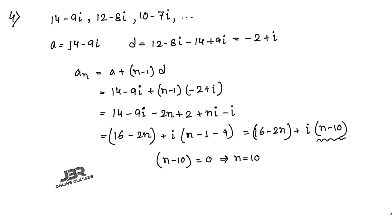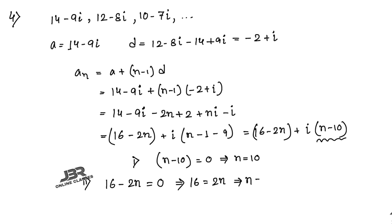For the term to be purely imaginary, the real part must equal zero: 16 − 2n = 0, so 2n = 16, giving n = 8. The 8th term is purely imaginary.